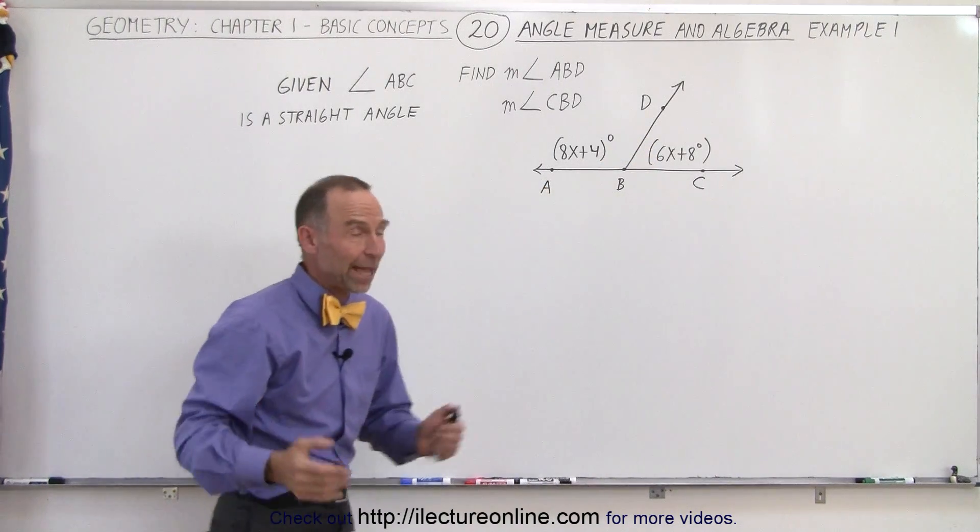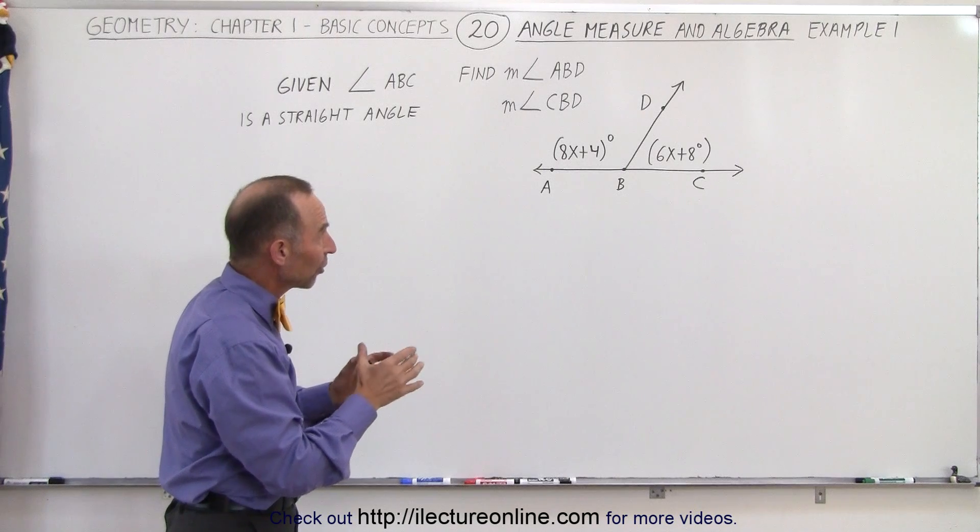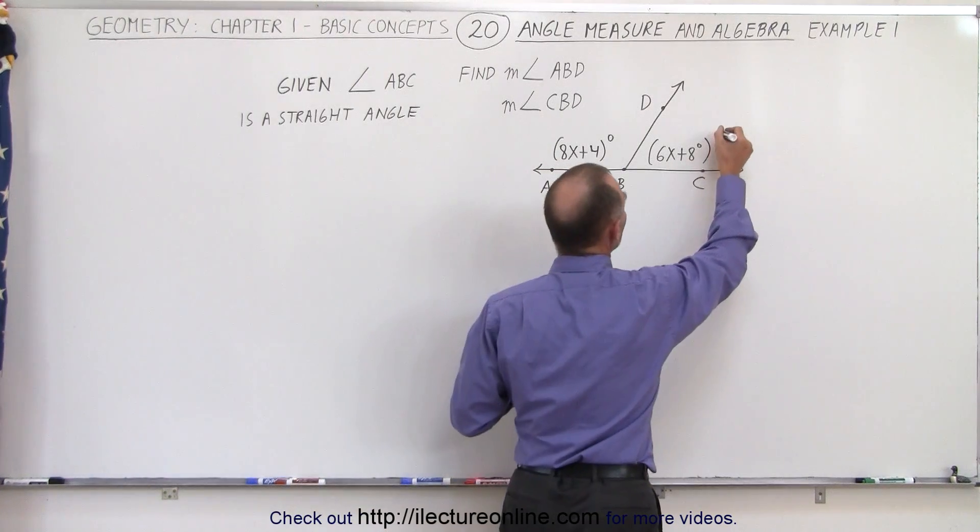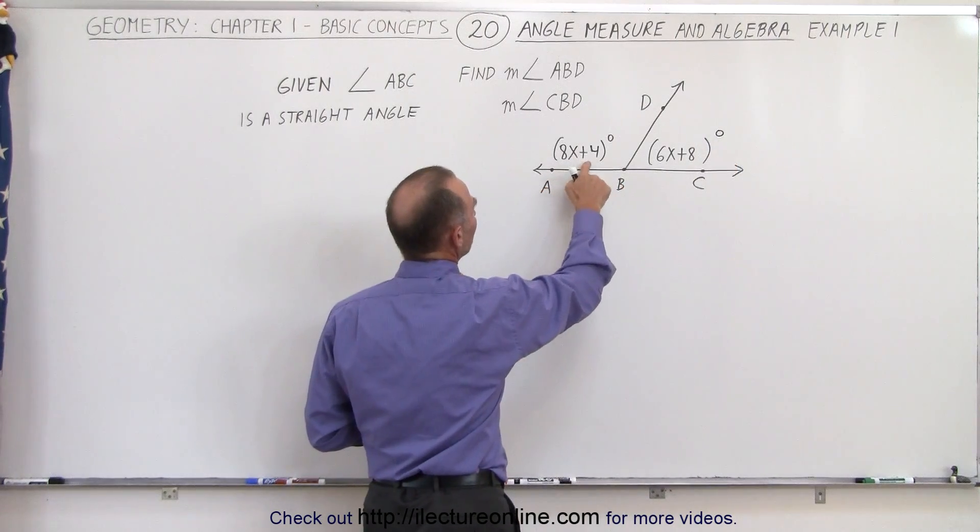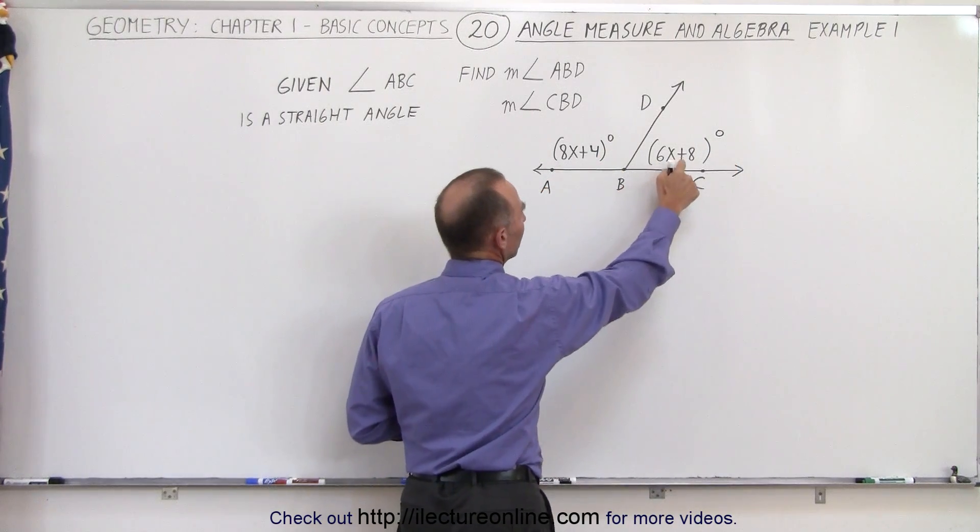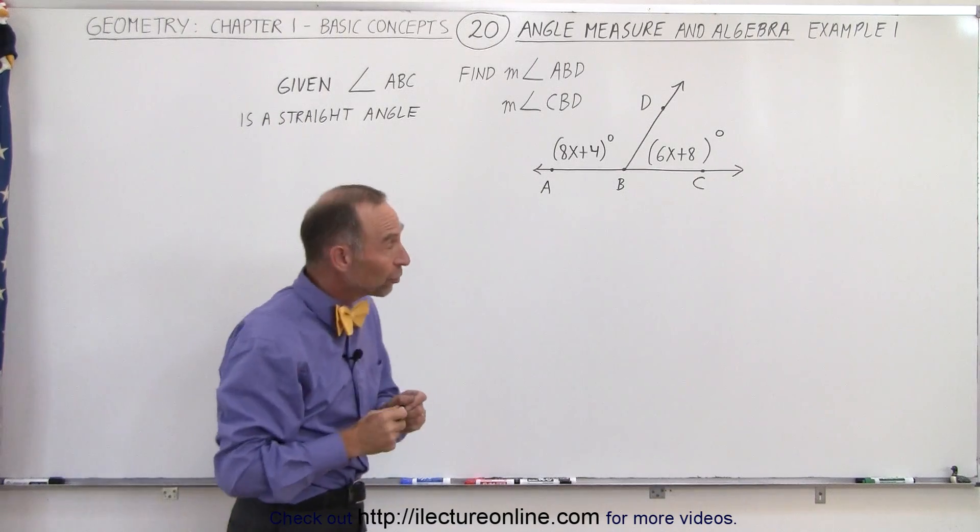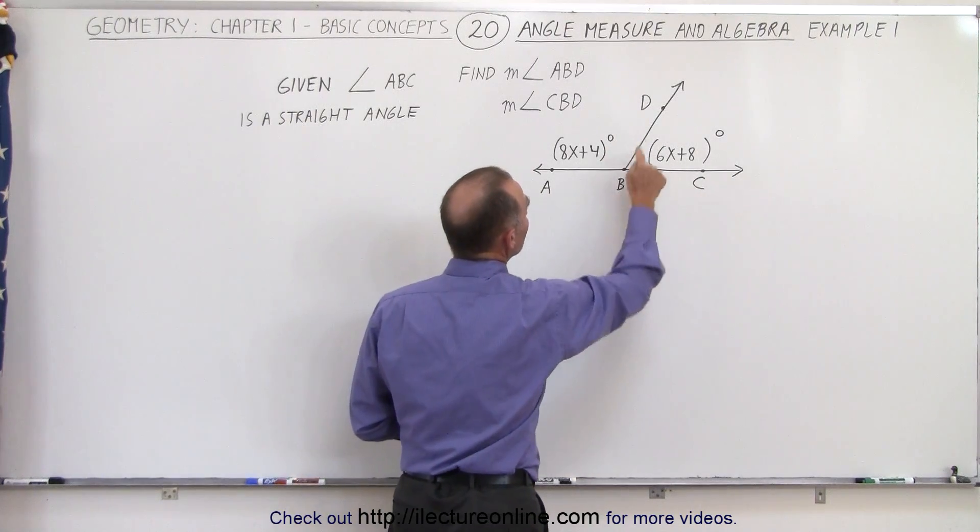So there's essentially three angles but two of the angles are given in terms of x. We have 8x plus 4 degrees and 6x plus 8 degrees for the measure of the two angles ABD and CBD.